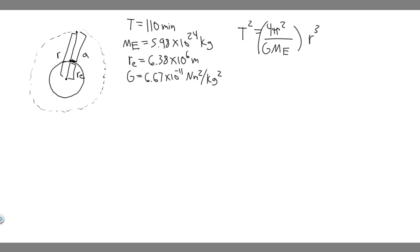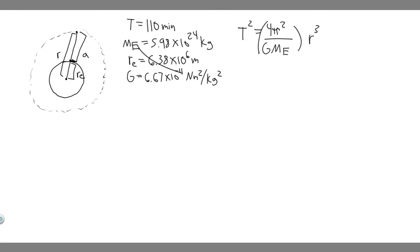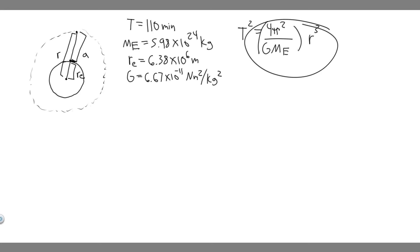In order to solve this, there are a few things you need to know. You need to know the radius of the Earth, which is 6.38 × 10⁶ meters. You need to know the mass of the Earth, 5.98 × 10²⁴ kilograms. And you need to know G, the gravitational constant, which is 6.67 × 10⁻¹¹.